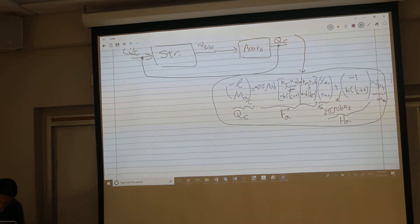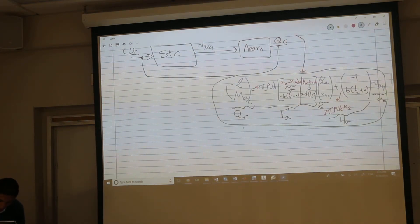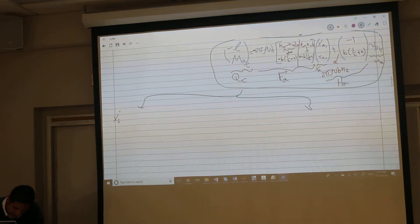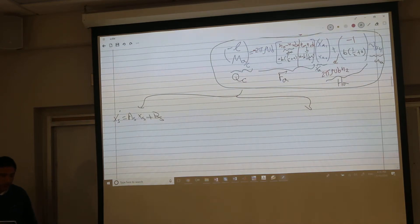In summary, here are your two models. x structure dot is a structure times x structure plus b structure times v3. What's the input to structure model? What's the input from physics?